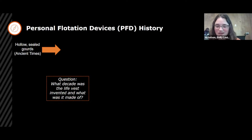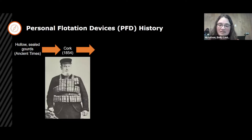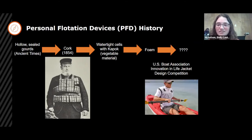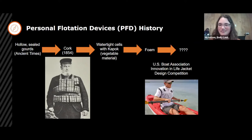Responses included 1910s, 1960s, rubber, cotton, and cork. It was cork, and it was much earlier than most were thinking — around the 1850s is when the first life vest as we think of it was invented. Since then it moved to watertight cells with kapok, which is a vegetable material, then into foam. Every year the US Boat Association hosts an innovation in life jacket design competition. The recent winner was a CT shirt with air chambers inside — if you fall in, you pull a tab and it fills up. The goal is a life jacket you wear anyway, without having to think about putting it on.